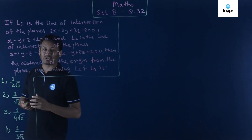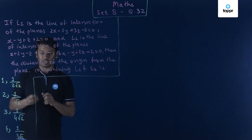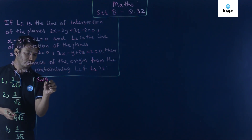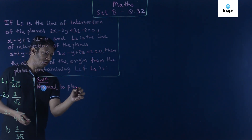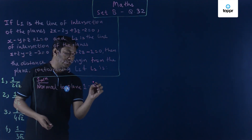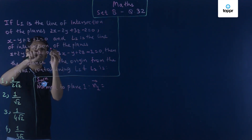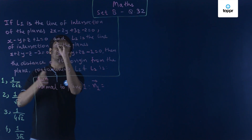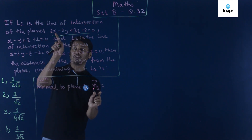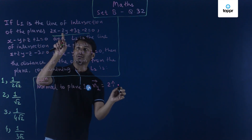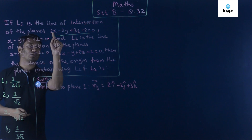The first thing we will do is write down the normals to all four planes. Normal to plane 1, N1, comes from 2x − 2y + 3z − 2 = 0, giving N1 = 2i − 2j + 3k. These are basically the coefficients of x, y, and z.